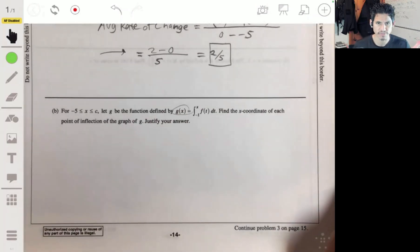Part B: For negative 5 to c, let g be the function defined by g of x equals the integral from negative 1 to x of f of t dt. Find the x coordinate of each point of inflection of the graph of g. When we're trying to figure out inflection points, you have to study the second derivative.